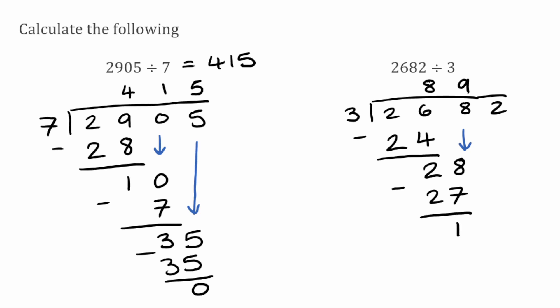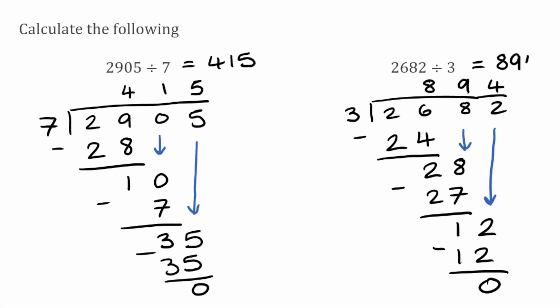I'm then going to bring down my final digit, which is a 2. So I've now got 12. How many 3s can we fit into 12? Well, we can fit 4 threes into 12 because 3 times 4 is 12. So when we subtract these, we're left with 0. So we have no remainder, meaning our answer would just be 894.